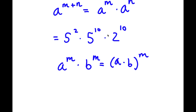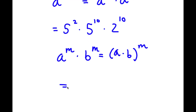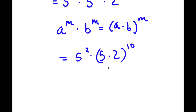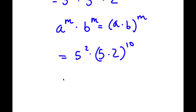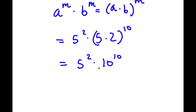So in this case, I have 5 to the power of 10 times 2 to the power of 10. Using the rule a^m × b^m = (a×b)^m, that's going to equal 5 times 2 to the power of 10. So 5 times 2 is simply 10. So now I have 5 to the power of 2 times 10 to the power of 10. Now 5 to the power of 2 is equal to 25.